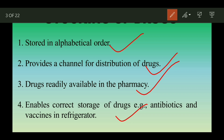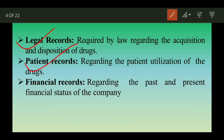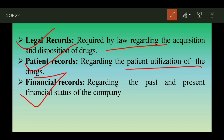Maintenance of registers is important. There are three types of records: one is the legal record, another is the patient record, and the third is the financial record. Legal records cover what is required by law regarding the acquisition and disposition of the drug. Patient records cover the patient's utilization of the drug. Financial records cover the past and present financial status of the company and help plan for the future.